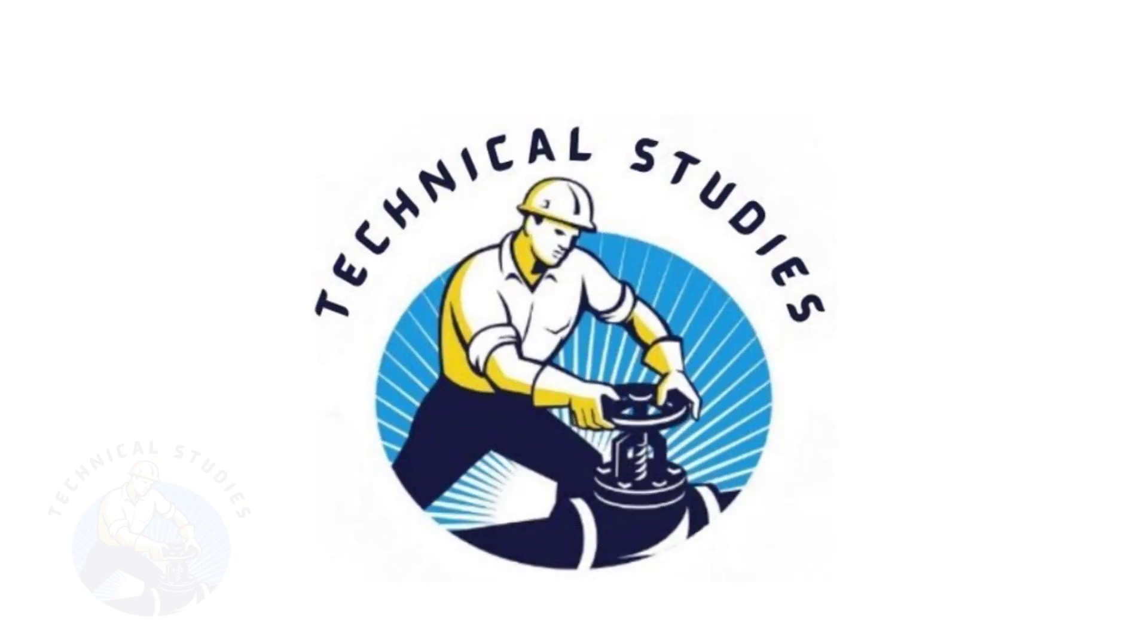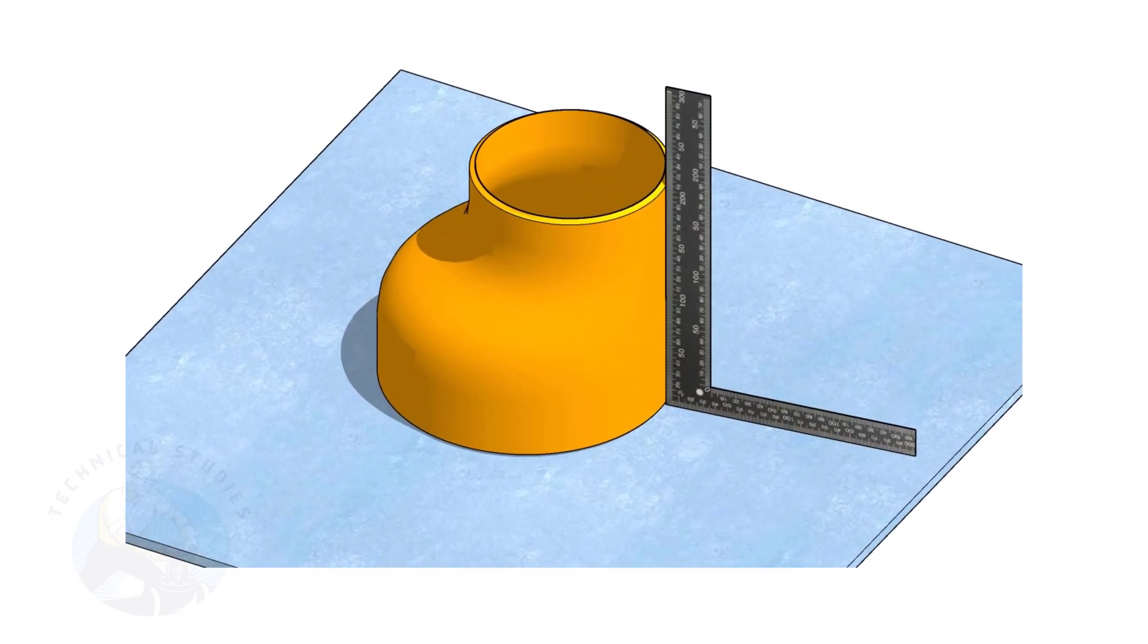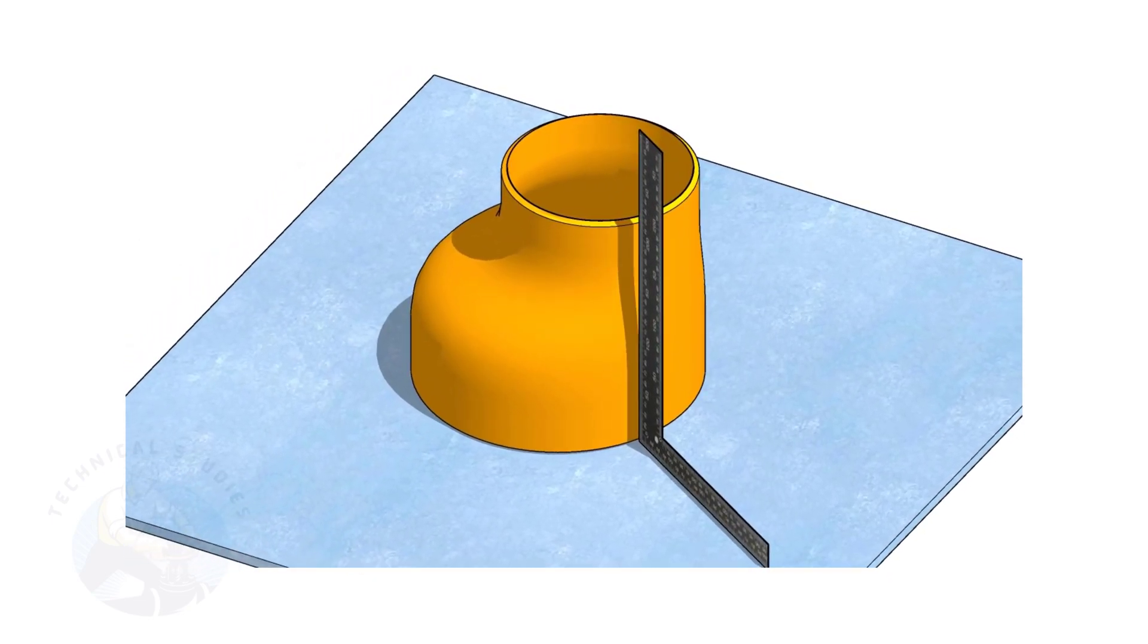Welcome to Technical Studies. Fitting an eccentric reducer to a pipe that is already fitted to another fitting like a flange, tee, elbow, etc. is a little tricky.